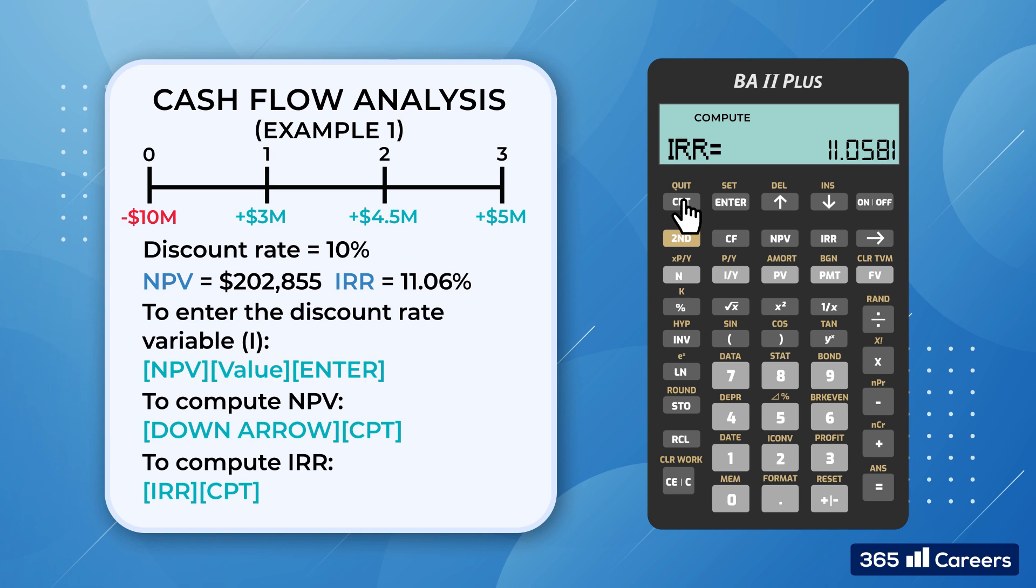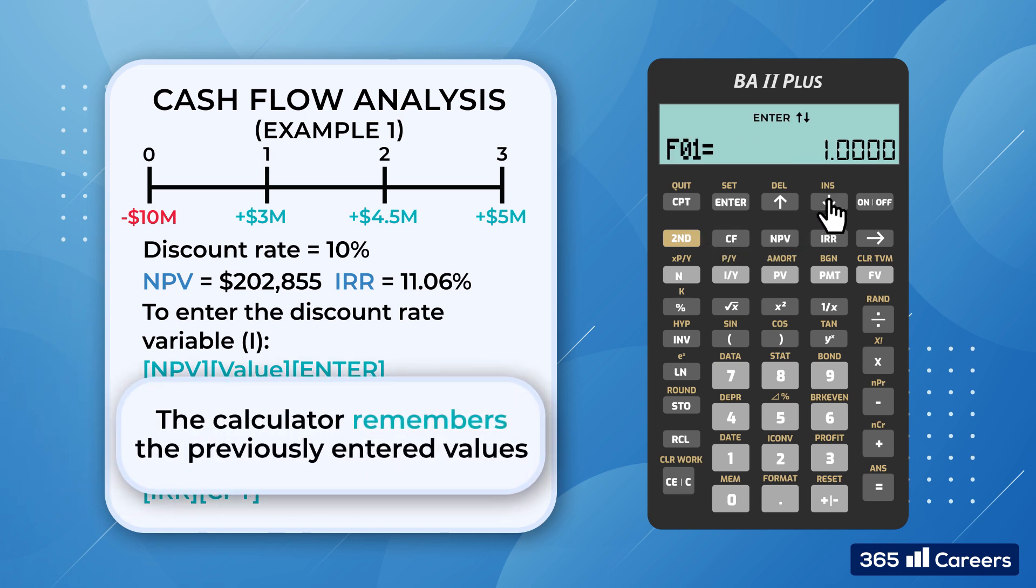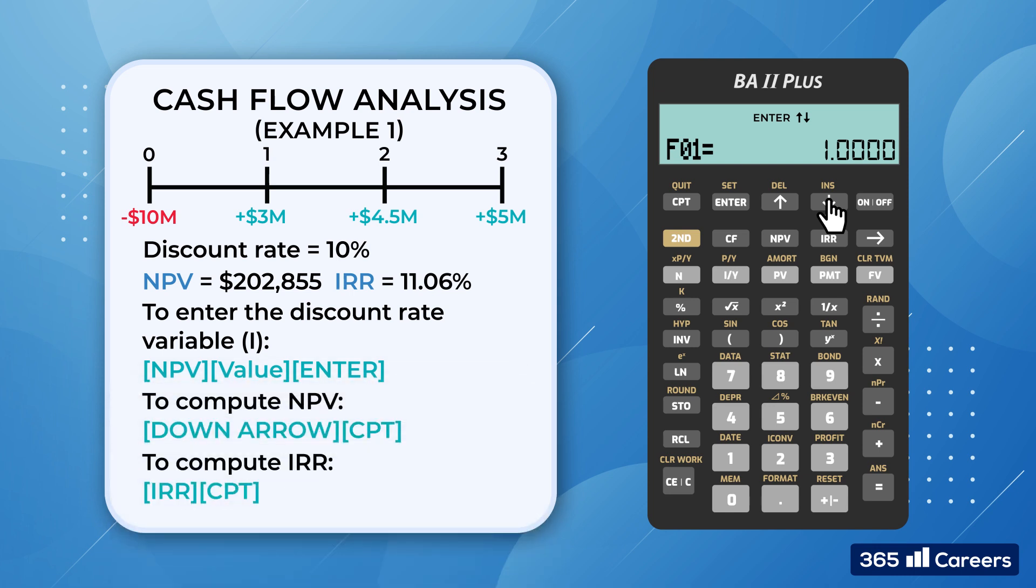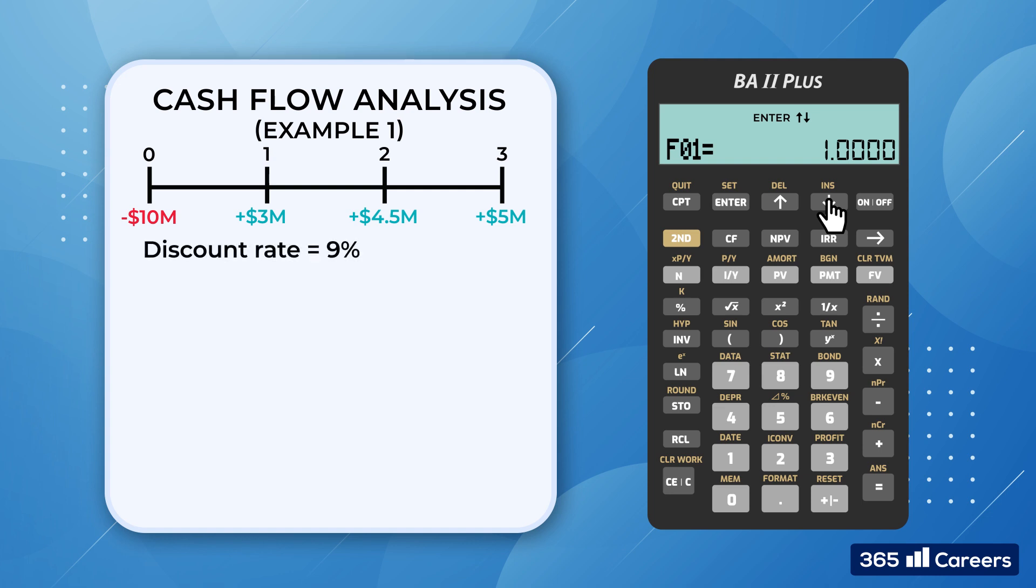Now if we return to the cash flow worksheet, we could see that the calculator remembers the values we entered previously. This memory function is very useful when we need to change any of the values. For example, let's assume that the discount rate is 9% instead of 10%. We press the NPV key and replace it. Then we compute for NPV to obtain the new NPV figure, $400,771. In this way, we can perform a sensitivity analysis effortlessly.